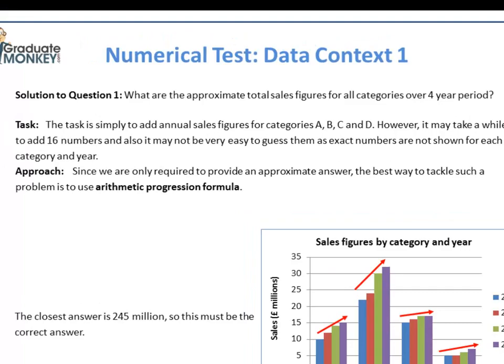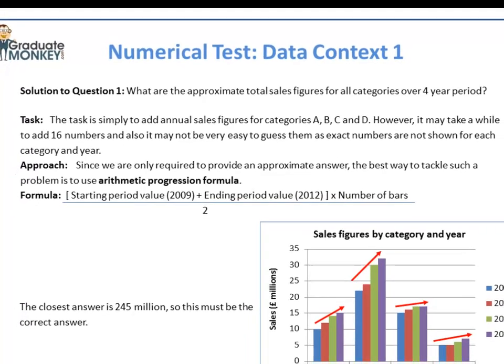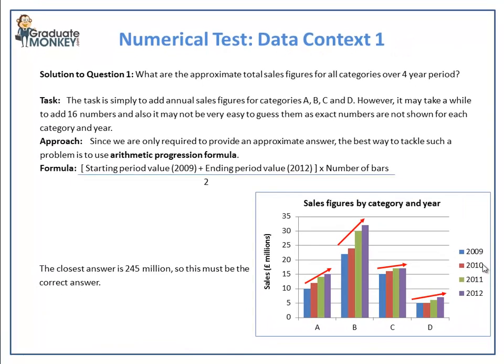The formula is simple. You just sum up the values for the starting and ending periods respectively, multiply the sum by the number of bars, and divide the result by 2.